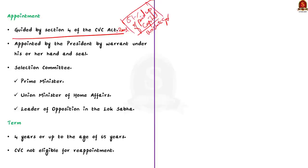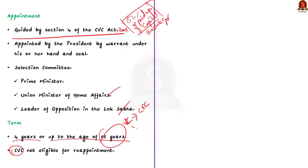Regarding the appointment procedure: the Central Vigilance Commissioner and Vigilance Commissioners are appointed as per Section 4 of the CVC Act 2003. They are selected by a committee chaired by the Prime Minister, with other members being the Union Minister of Home Affairs and the Leader of Opposition in the Lok Sabha. After the committee's recommendation, the CVC and VCs are appointed by the President. Both hold office for a term of four years or till they attain the age of 65 years, whichever is earlier. A Central Vigilance Commissioner is ineligible for reappointment, ensuring service without fear or favor.